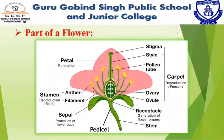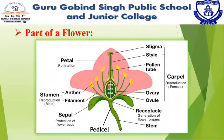The androecium is the male reproductive part of the flower. It consists of stamens. Each stamen is made up of an anther and a filament. The gynoecium is the female reproductive part of the flower. It is made up of carpels. A carpel consists of a stigma, style, and ovary. This is all about the parts of a flower.